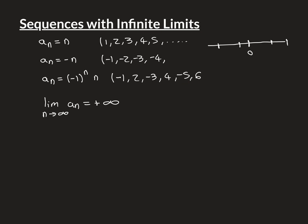The crucial point is that if we just made it that the terms need to get indefinitely big, then the badly behaved sequence would satisfy that property, because all even terms get indefinitely big. So we need them to get and stay indefinitely big. That's where the badly behaved sequence fails, because for any large even term, the next one is going to be a negative number. So formally: for all x greater than zero, there must exist a big N in the natural numbers, such that for all little n greater than or equal to big N, the terms of the sequence satisfy a_n is greater than x.